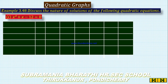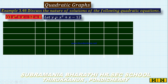Number 3.15: Quadratic Graphs — how we want to draw quadratic graphs and find the solutions. Continuing from last class, we look at example 3.48: discuss the nature of solutions of the following quadratic equations. The equation is x² + x − 12 = 0. We want to change this to y = x² + x − 12 and find the points according to the solutions.